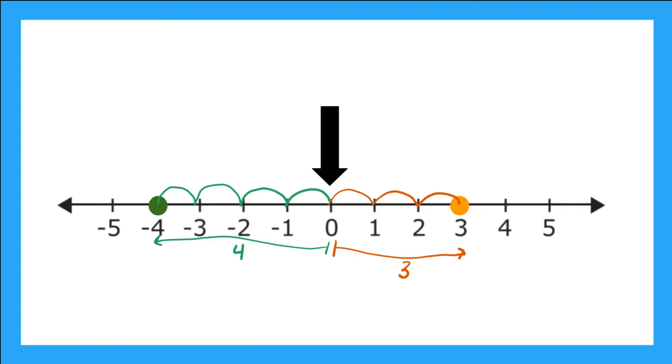Now distance to zero is the same as saying the absolute value. So the absolute value of three is the same as the distance three is from zero, which we found to be three. Now the same is true for negative four. The absolute value of negative four is the same as the distance negative four is from zero, which we found to be four.